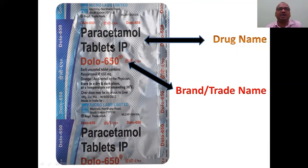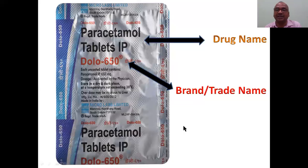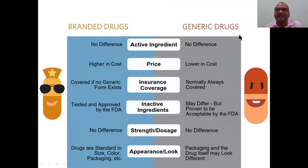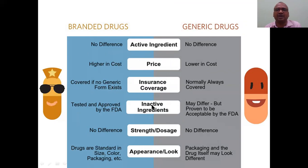Regarding drug names: a drug has a generic name — for example, paracetamol — and a brand name, also called a trade name, given by the manufacturing company such as Microlabs. The differences between a branded drug and a generic drug: active ingredient is the same — no difference. Generic drugs are lower in cost; branded drugs are higher in cost. Appearance, strength, dose, and inactive ingredients may differ slightly, but almost there is no real difference. Generic drugs are cheaper and suitable for ordinary patients.